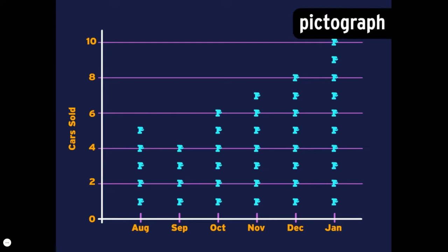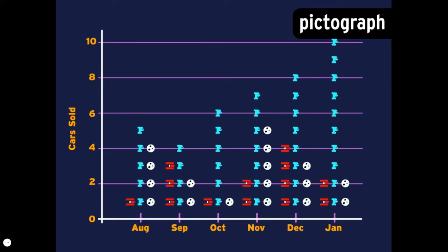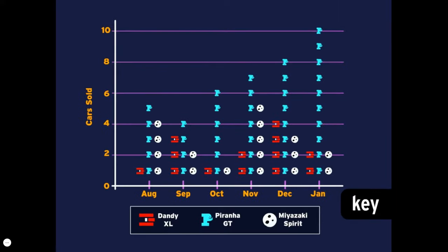If we change the dots into images, that's called a pictograph. Using images also lets us introduce another variable — different car models. You can see what each image represents in the key. That's where you'll find info to help you interpret the graph. So now we've got three variables: months of the year, car models, and how many of each were sold.